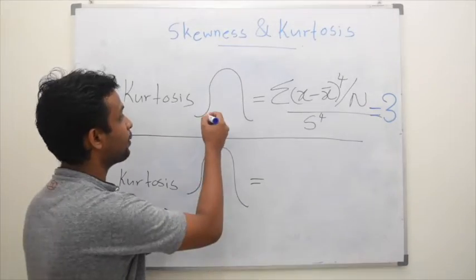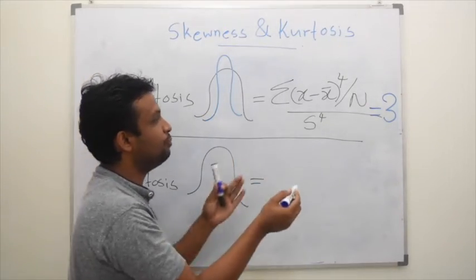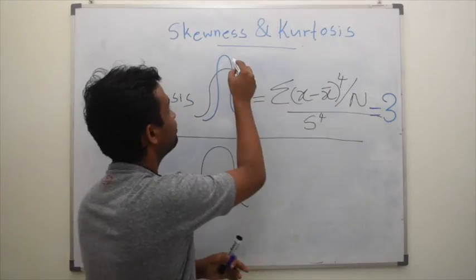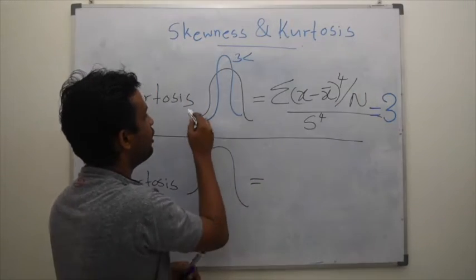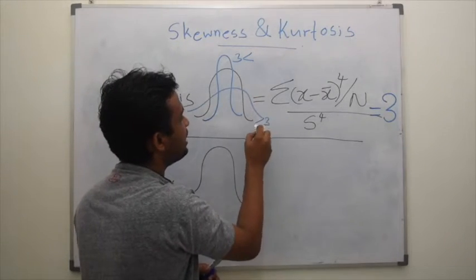So if it is leptokurtic, the value will be more than 3. And if it is platykurtic, the value will be less than 3.